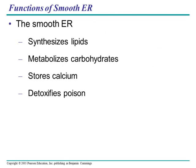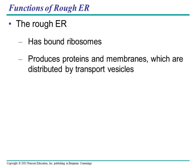Smooth ER has a number of functions. One of the main ones is that it synthesizes lipids. It also helps to metabolize carbohydrates, stores calcium, and helps to detoxify poisons. Interestingly, people who do more drugs or drink more alcohol have a higher number of smooth ER in their liver cells because it helps to detoxify those poisons — this is actually very easily seen under the microscope.